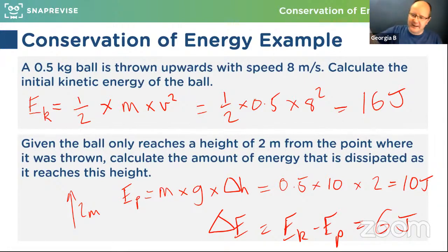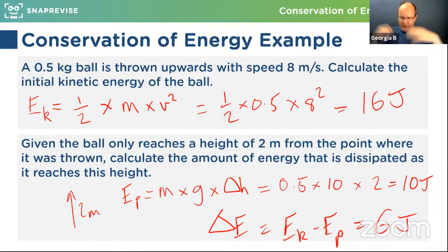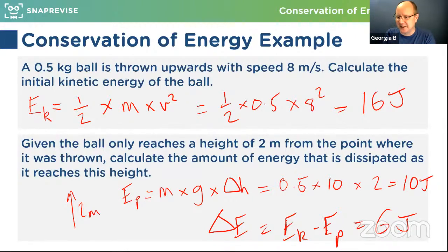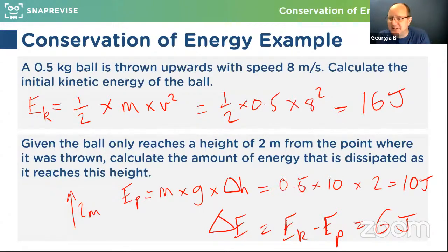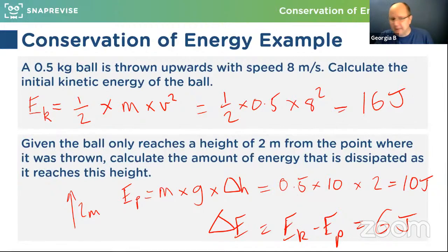That dissipated energy — the GPE we end up with is what didn't get transformed into a non-useful form. What are the lost energy types from a kettle? We're going to get heat loss into the air and into the kettle itself, and we're going to get sound. We might get some light as well. In a moving car: heat from the engine is not useful, especially in summer. We've got sound from the engine, and heat due to friction doing work against air resistance and between the tyres and the road.